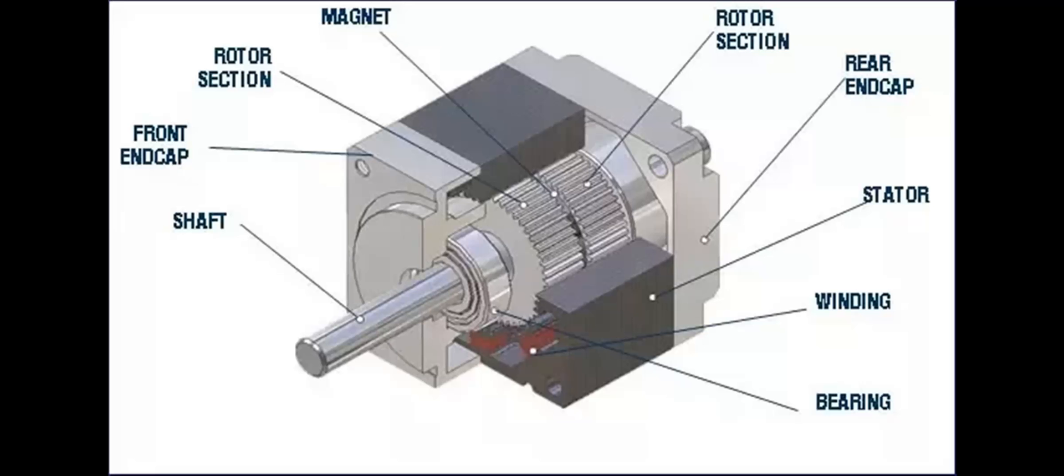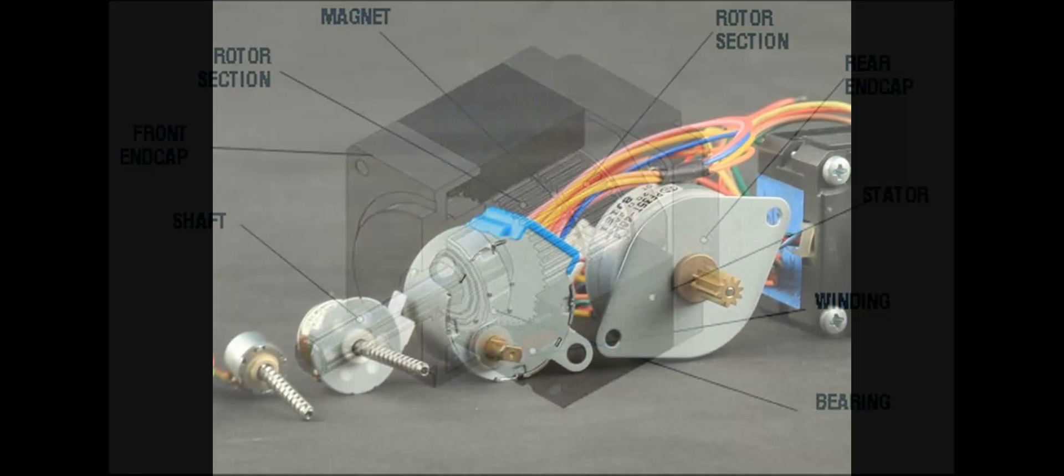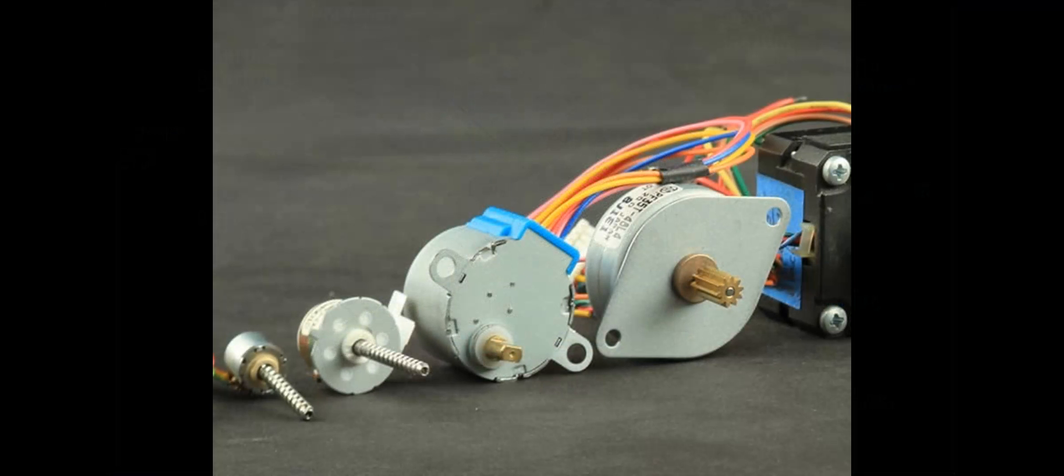So in the case of the stepper motor, accurate positioning is possible with open loop control. However, with open loop control of a stepper motor, if the system has been switched off there is no record of the motor's present position, so firstly a starting point must be established.